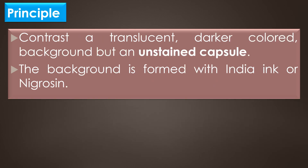The negative staining method contrasts a translucent, darker colored background with stained cells but an unstained capsule. The background is formed with Indian ink or nigrosine. Indian ink is difficult to obtain nowadays; however, nigrosine is easily acquired nowadays.